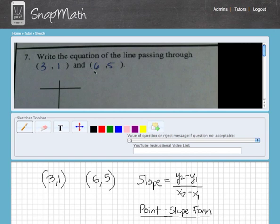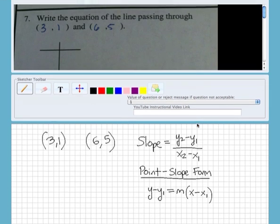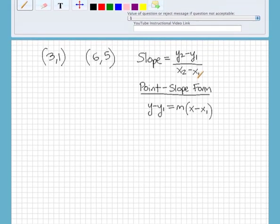So first, let's look at the question: write the equation of the line passing through (3,1) and (6,5). They give us two points, and I've written them down here.